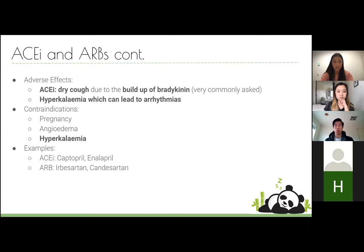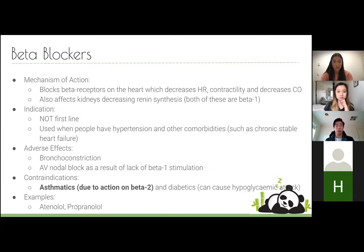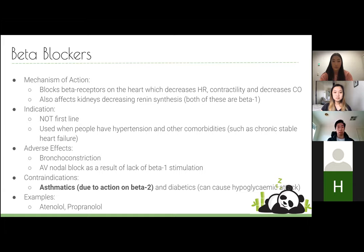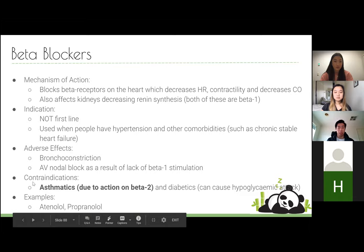Beta blockers block beta receptors on the heart, decreasing heart rate, contractility, and cardiac output. They also decrease renin synthesis in the kidneys. These are not first line and are used for patients with hypertension and other comorbidities such as chronic stable heart failure. An important detail is that beta blockers can cause bronchoconstriction and are generally contraindicated in asthmatics.